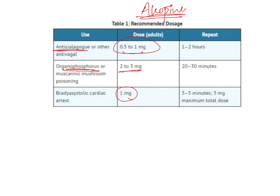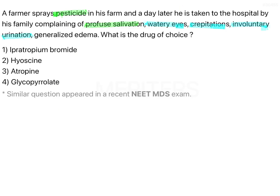The maximum dose of atropine for bradycardia is 3 milligrams — you cannot exceed this. If the patient does not respond within 10 to 15 minutes, stop the drug completely. As dentists, remember the anti-sialogogue dose is 0.5 to 1 milligram, repeated every 1 to 2 hours. Coming back to the question: this is an organophosphorus poisoning patient, so the drug of choice is atropine.